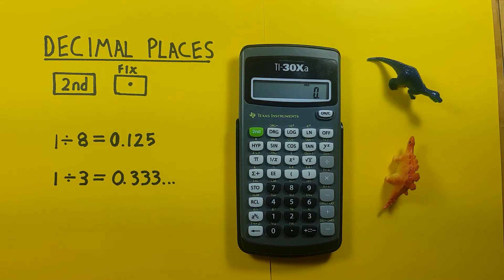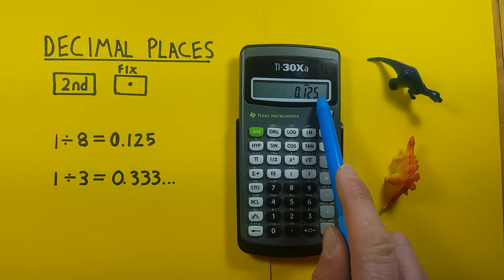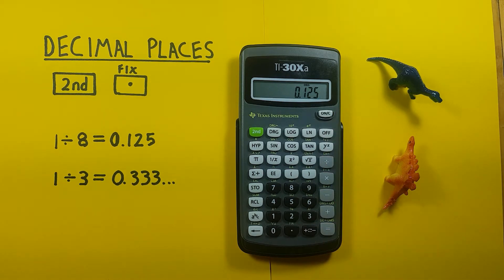Normally our calculator will be in what's called float mode, where it'll present however many decimals we need to give our answer. So if we do 1 divided by 8, we see we get 0.125.